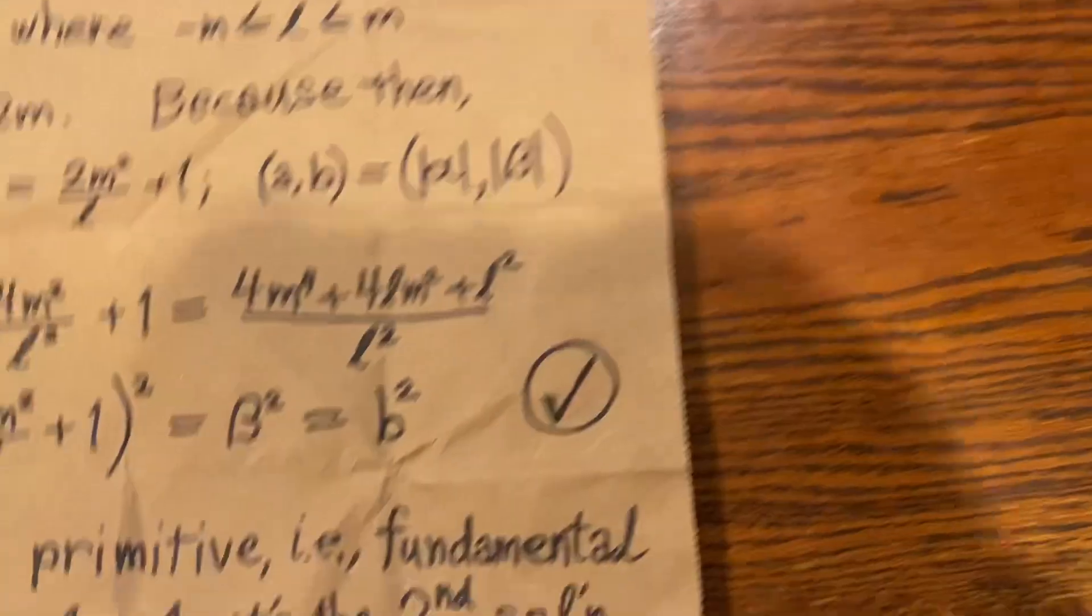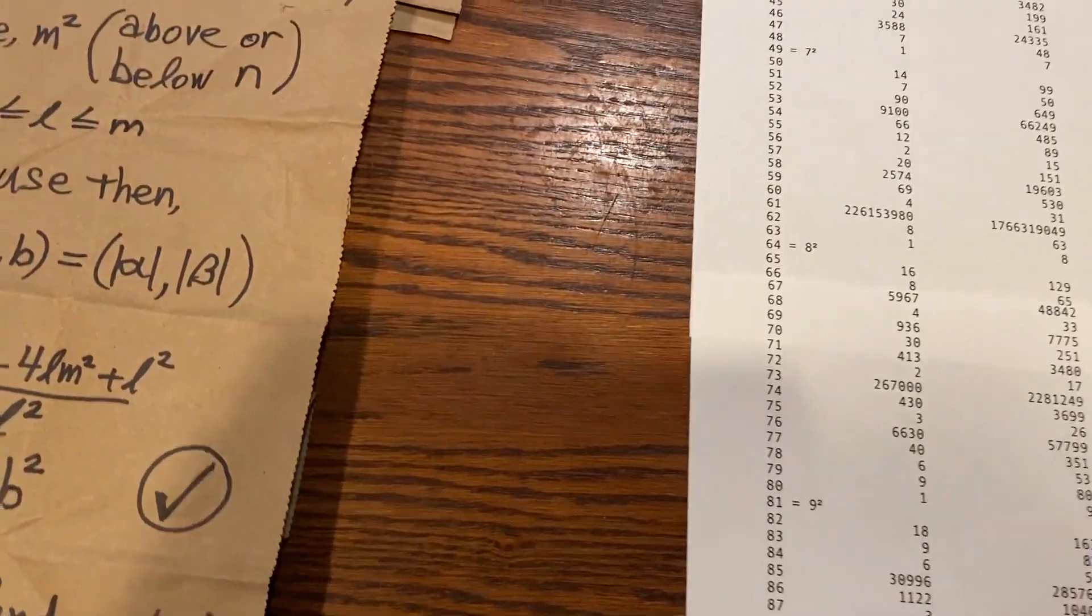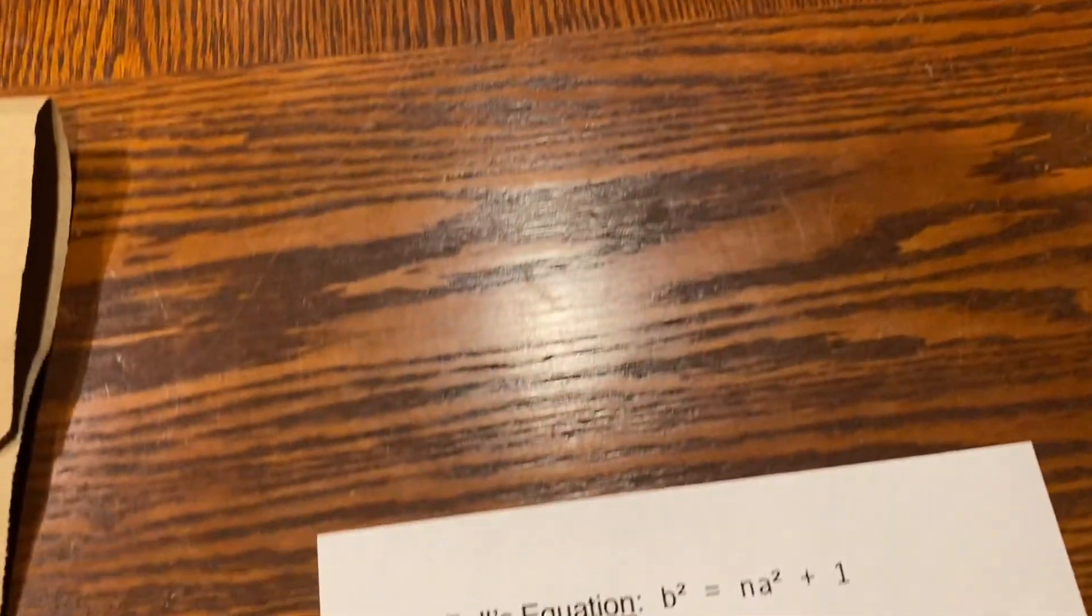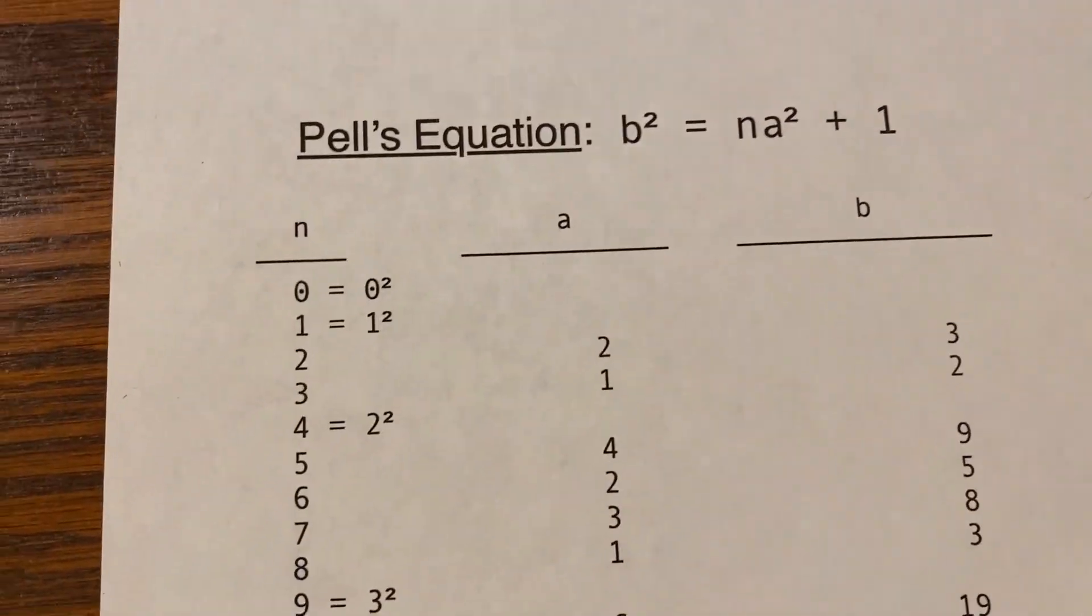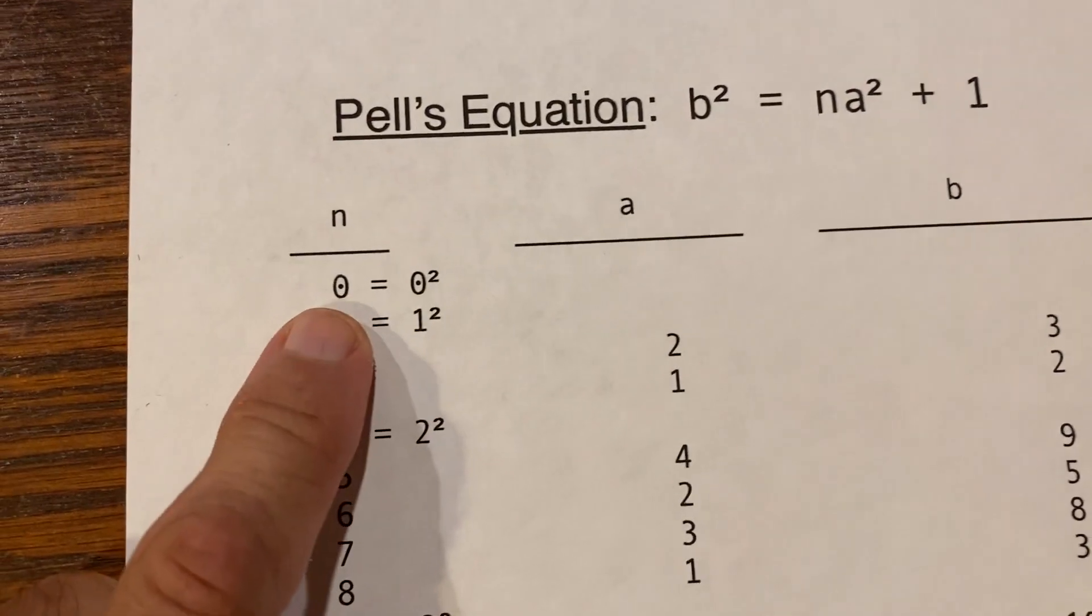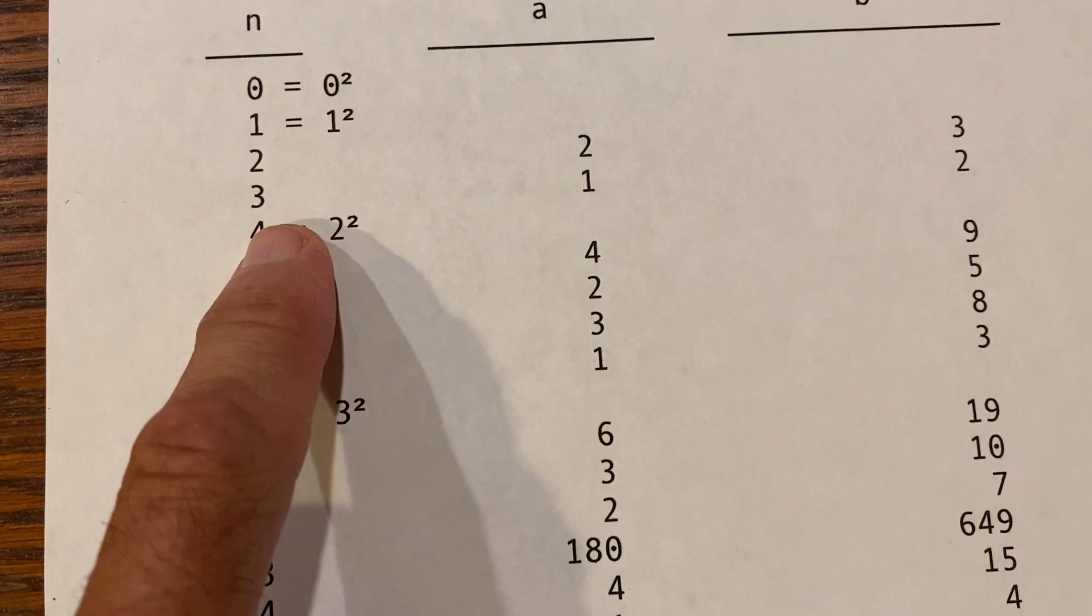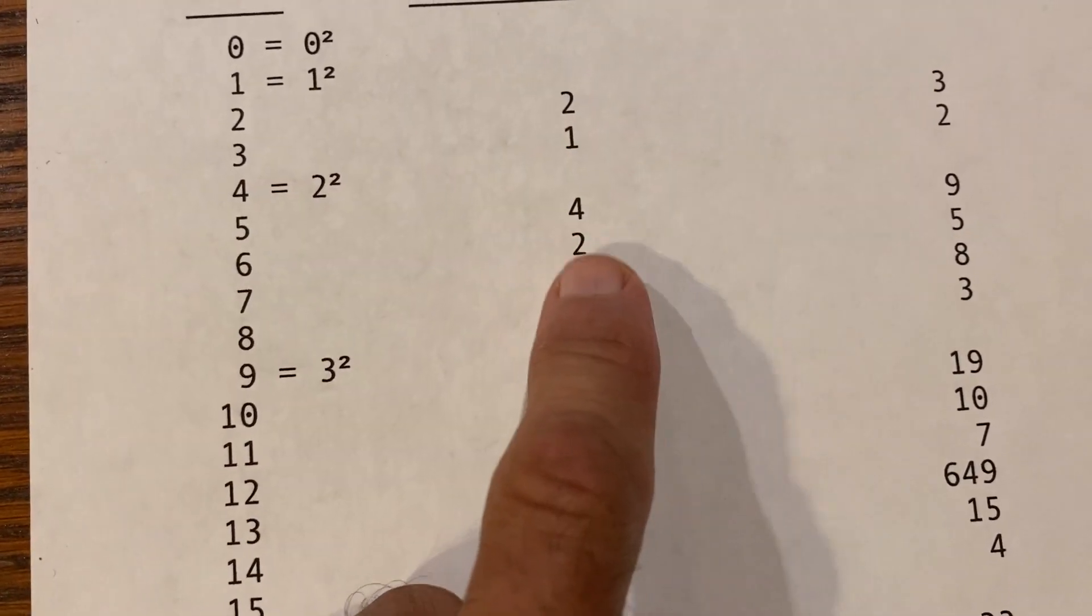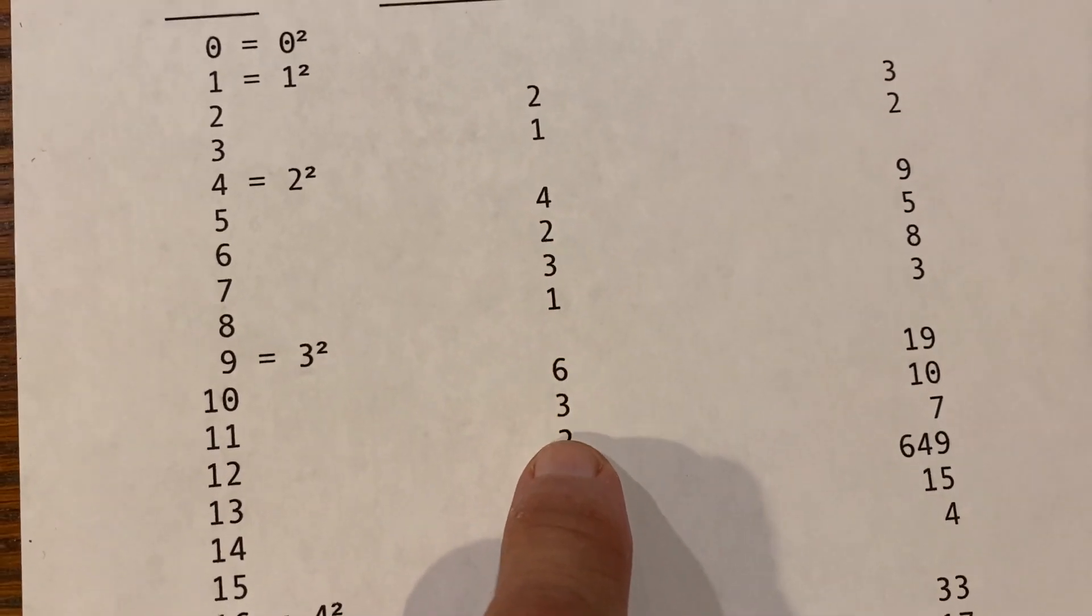Okay, that's a little bit about a method and mention of there being a general method of solution. So, here's Pell's equation. Here are some solutions, a and b. You'll note that when n is a square, there is no solution. When it's a non-square positive integer, there are solutions.